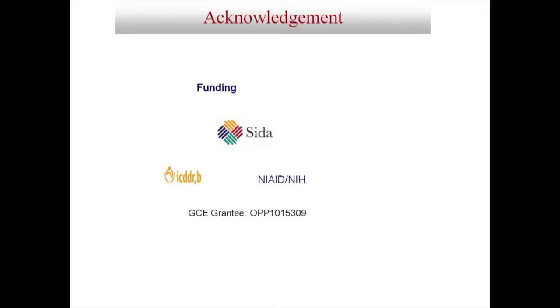We collected plasma from vaccinees aged two to five years at day one (before vaccination), then day seven and day 21 after the third vaccine dose. We also collected plasma from culture-positive patients of different age groups — young children, older children, and adults — at enrollment and days seven and twenty-one. Vaccinees had significantly higher LPS IgA and LPS IgG responses after vaccination compared with pre-vaccination. We did not find any significant difference in avidity indices for LPS IgG in different age groups of culture-positive patients. Even young children mounted antibodies with high avidity.